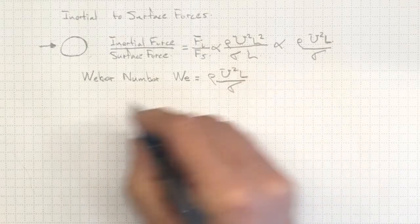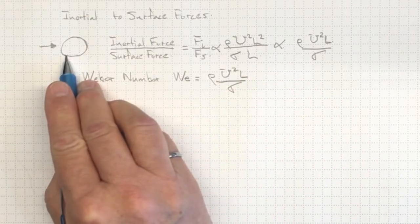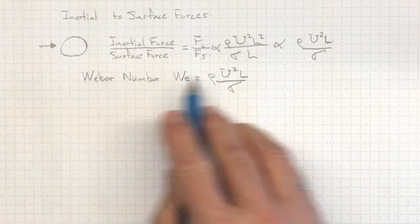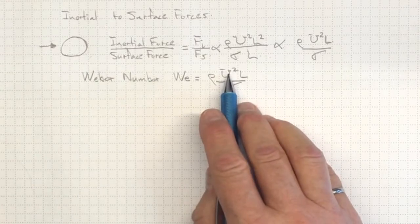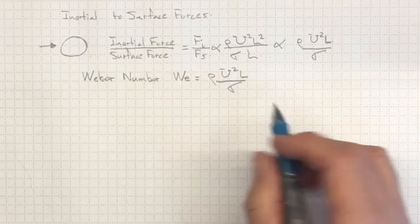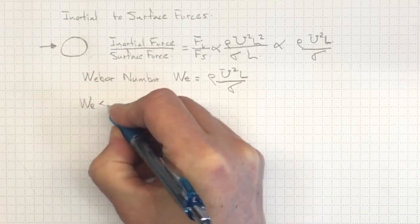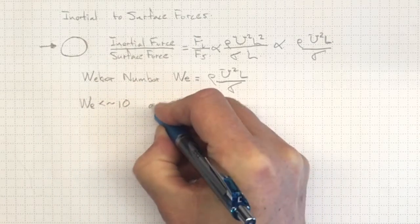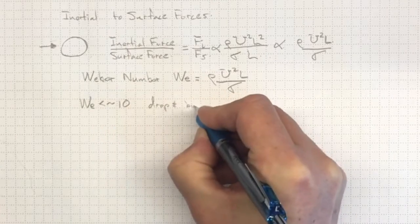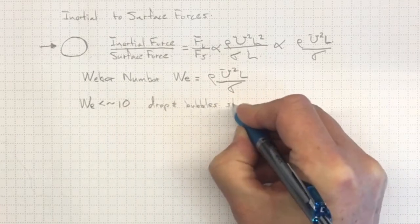And it's going to be important whenever we're looking at drops or bubbles or other situations where surface tension becomes significant in our flow behavior. Now, for drops and bubbles, if Weber number is less than around 10, drops and bubbles don't break up. They stay stable.